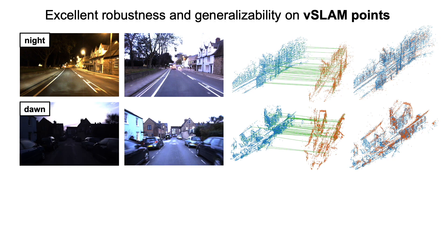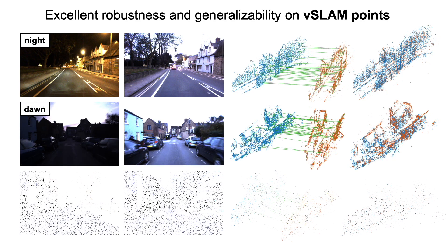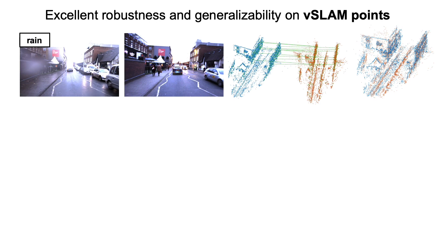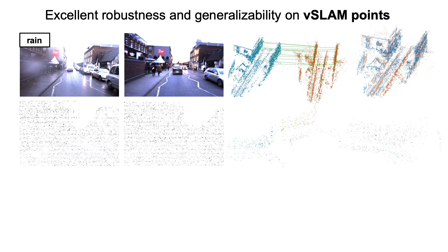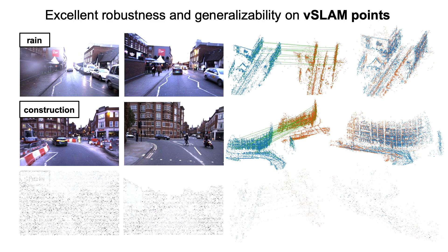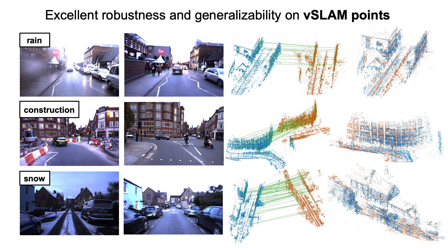We use StereoDSO to generate point clouds from sequences with different daytimes including night, dawn, and noon. The sequences also cover changes of weather, season, and varying scene layouts caused by construction. Please note that the model used here is only trained on LiDAR points without fine-tuning.